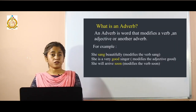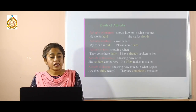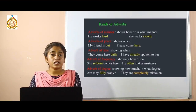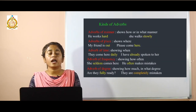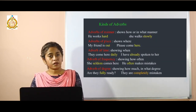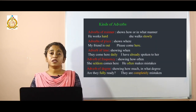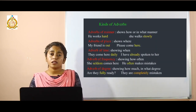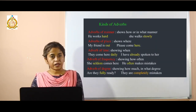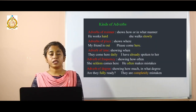Now let's study different kinds of adverbs. The first kind is adverb of manner. Adverb of manner tells us how a particular action has been performed — the question 'how.' See the example: 'He works hard.' The way that person is working is your adverb of manner. How has he worked? He has worked hard — 'hard' is your adverb of manner.